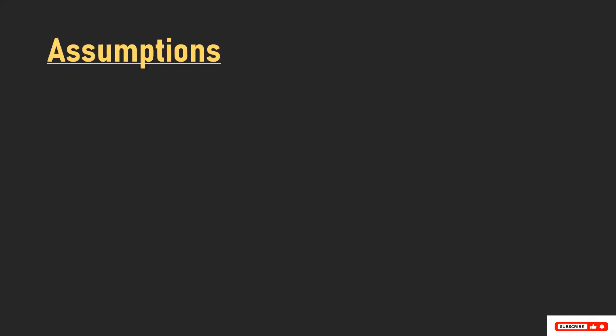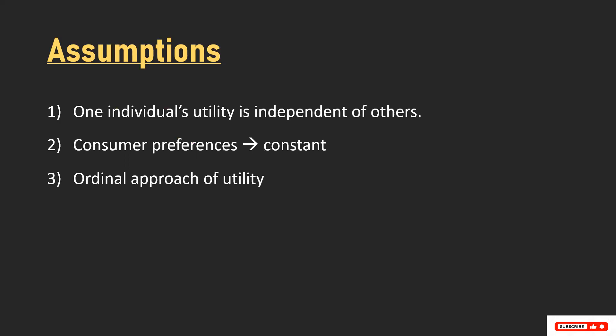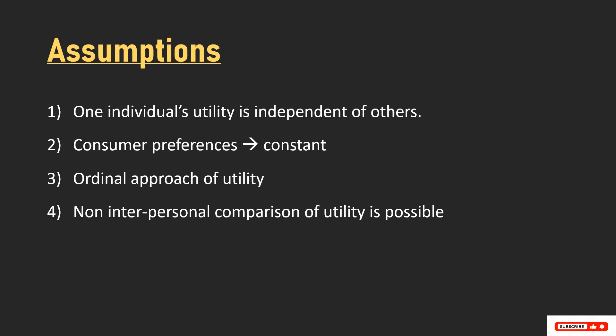Now let's discuss the assumptions before we understand the Kaldor-Hicks criterion. The first assumption says that one individual's utility is independent of others — so individual A's utility is independent of other individuals. Second, consumer preferences are constant; there is no change in consumer preferences. Third, this principle considers the ordinal approach of utility, meaning utilities can be arranged in order or you can give ranks to utility. Fourth, there is no interpersonal comparison of utility — you cannot compare the utility of individual A with the utility of individual B or other individuals.